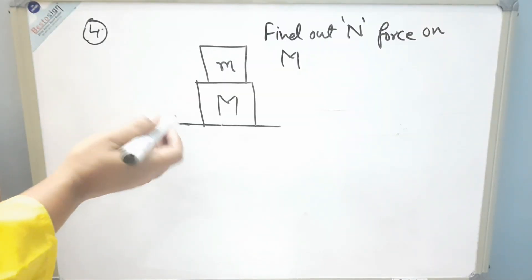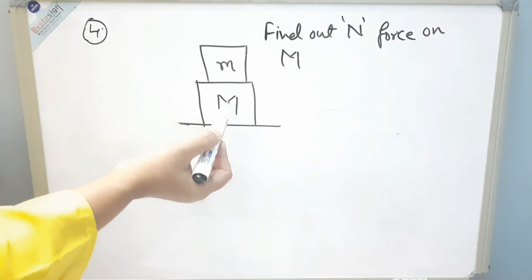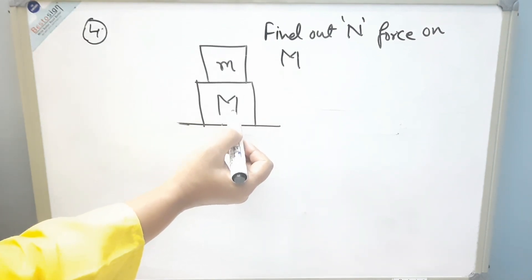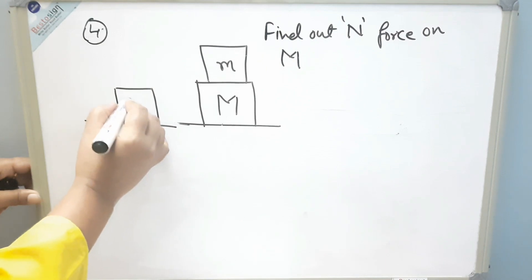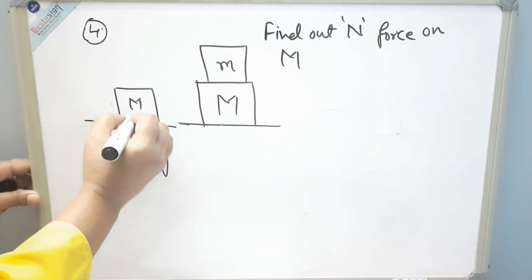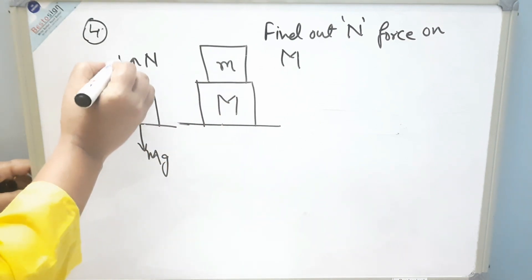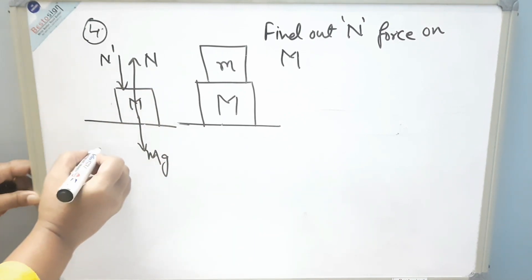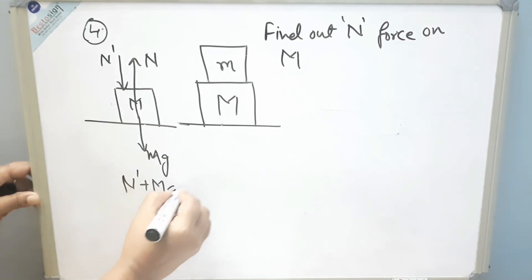This is our fourth situation. As you can see, there are two objects and small m is resting on capital M. We have to find the normal reaction force of capital M. First, we draw the free body diagram of capital M: Mg acts downward, N acts upward, and because of small m there will be another reaction force N dash acting downward.